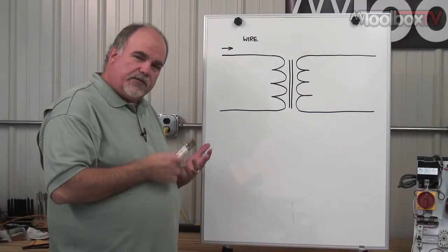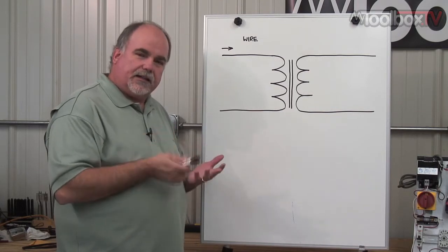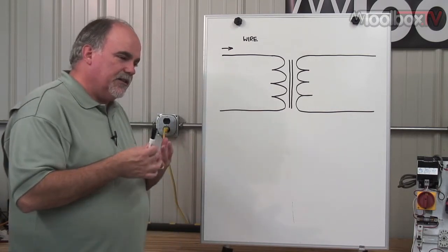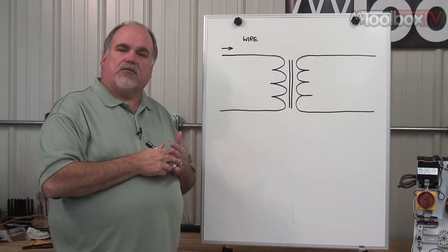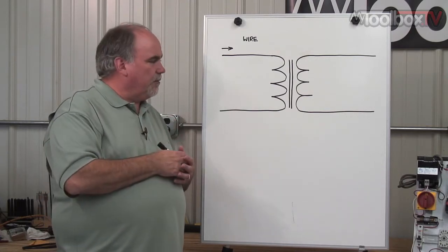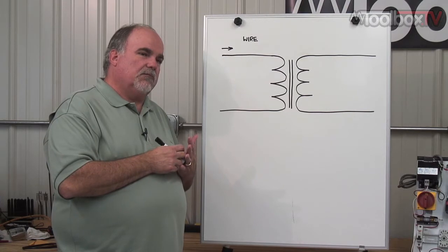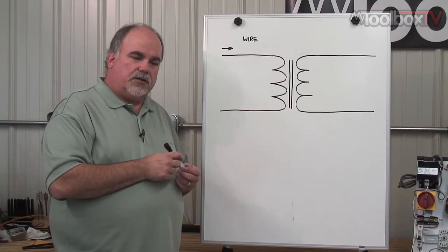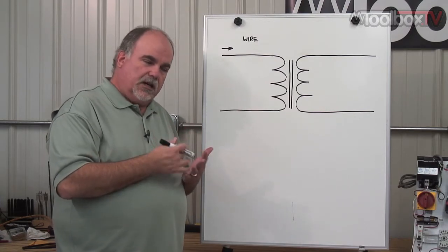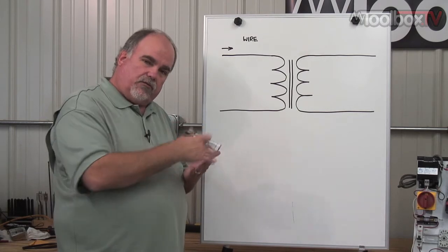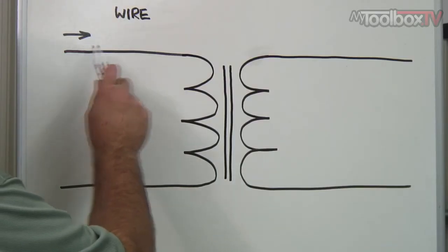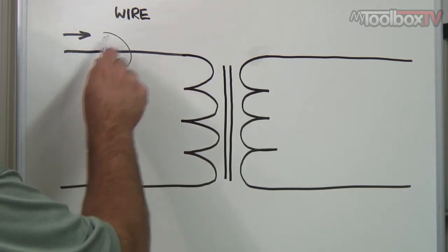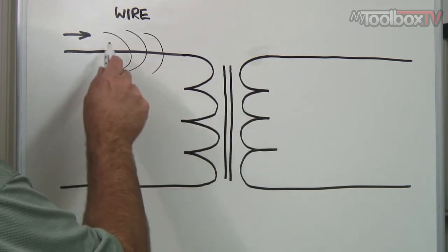It's hard to talk about transformers without first talking about magnetism. Magnetism is so important in all electrical work, but in transformers it's what makes them function. A simple magnetic rule in electricity is: if you've got a conductor that is conducting current through it, like this wire here, there's also a magnetic field around that conductor.